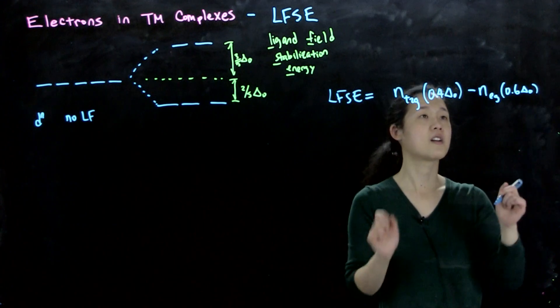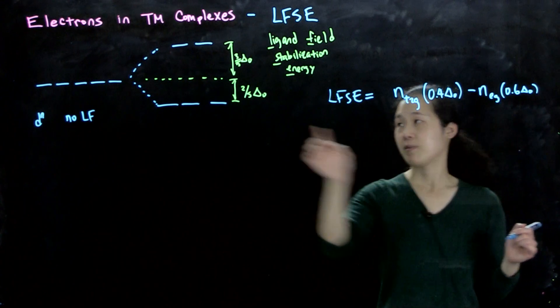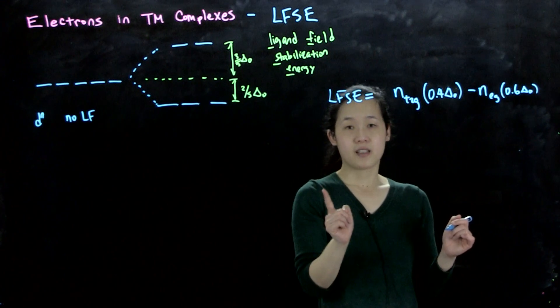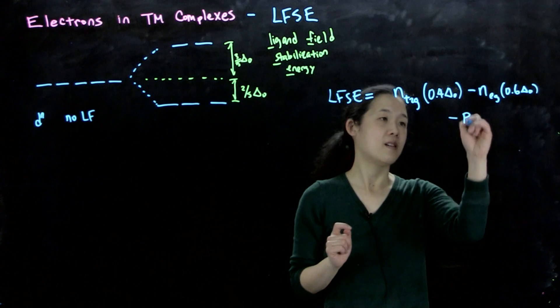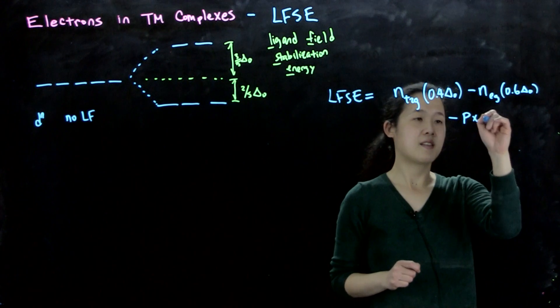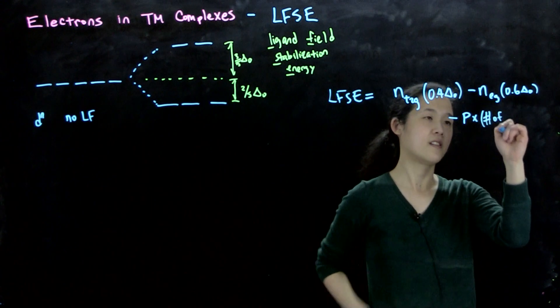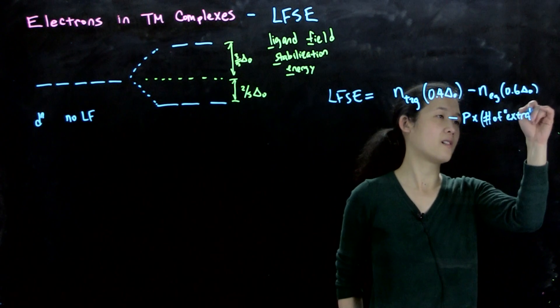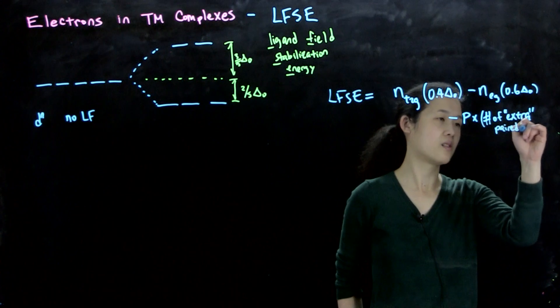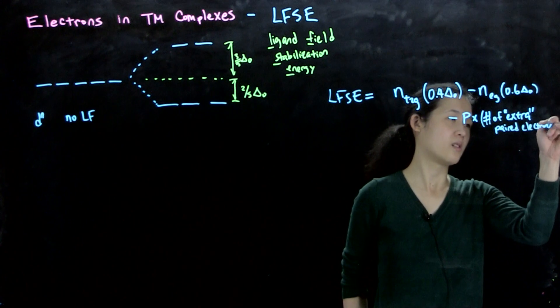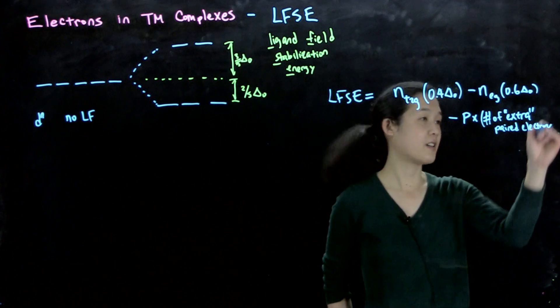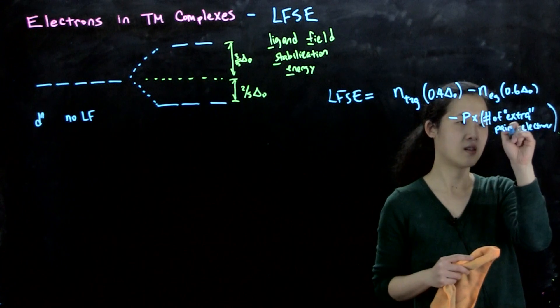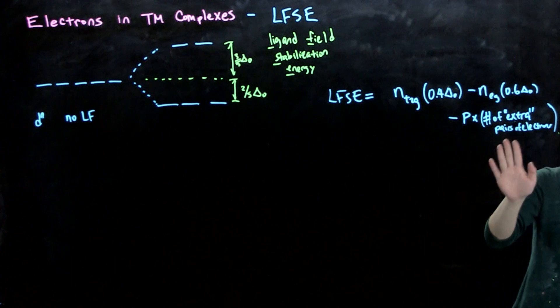This term is destabilizing because it's higher energy. This is stabilizing, this is destabilizing, and then what's also destabilizing is pairing, so minus P. And this is P times the number of extra pairs of electrons, so one P per pair. I'll explain what this means in a little bit.